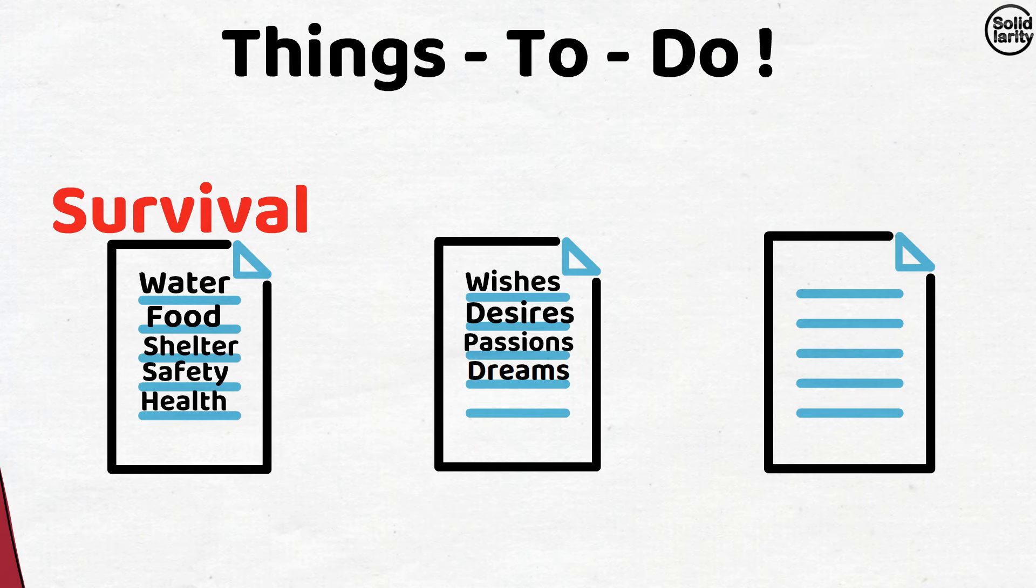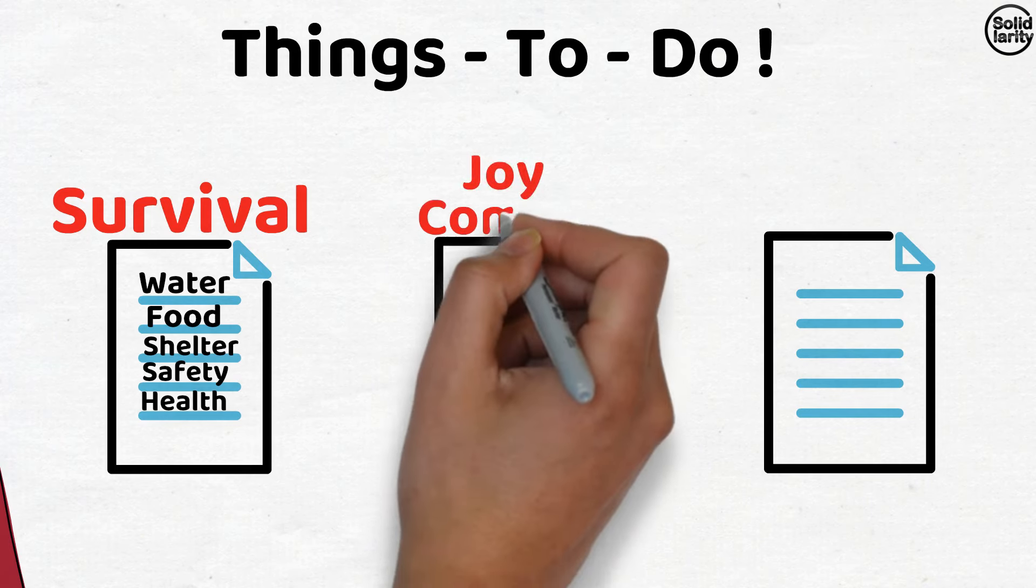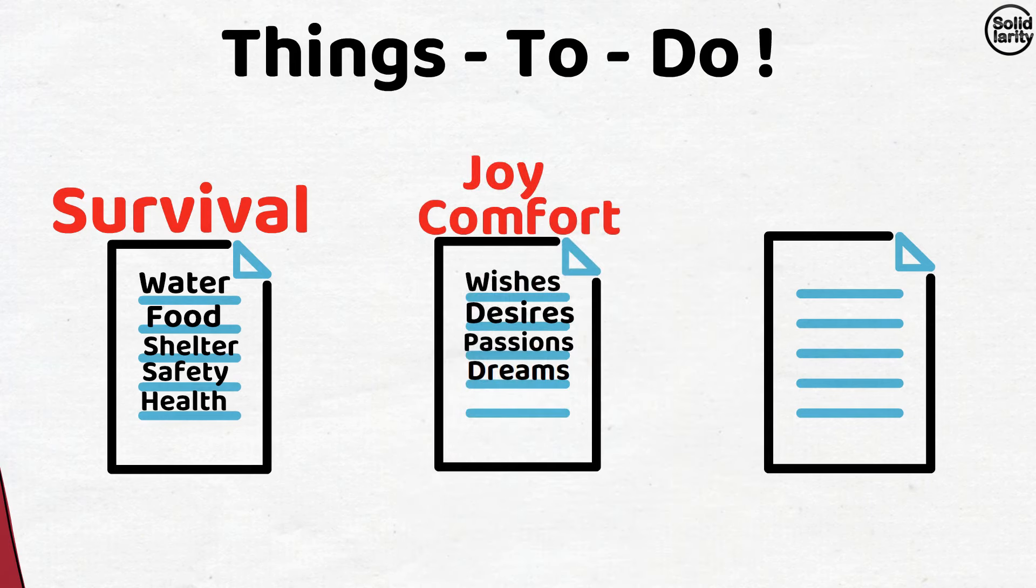The second list has things like wishes, desires, passions, and dreams. To define it a little more, this list has things related to his joy and comfort. In the third list, he has his long-term life goals, the purpose of life, and missions. To be more precise, he just wants to be useful for the world and its inhabitants in any possible way.